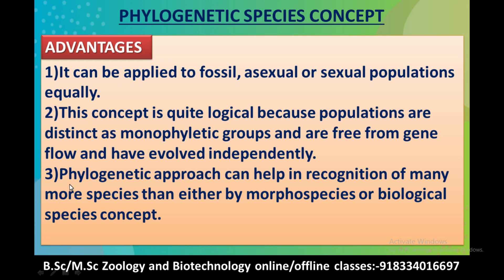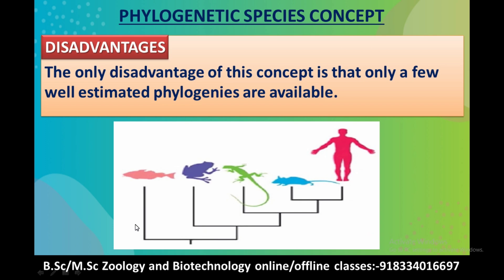The third advantage is that the phylogenetic approach can help in the recognition of many more species than either the morphological species concept or the biological species concept. The only disadvantage of this concept is that only a few well-estimated phylogenies are available.